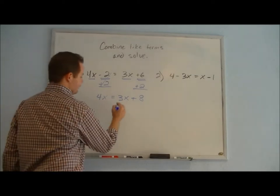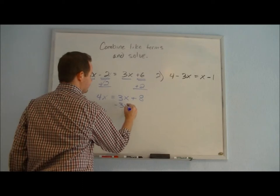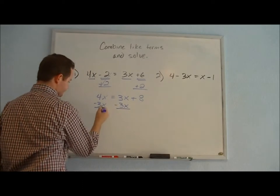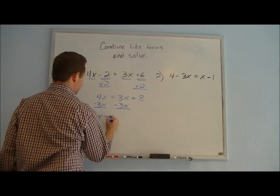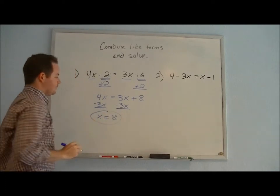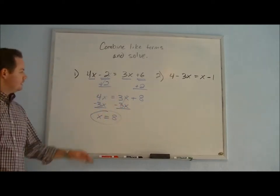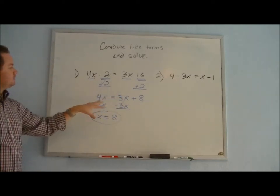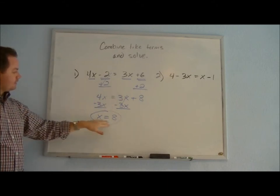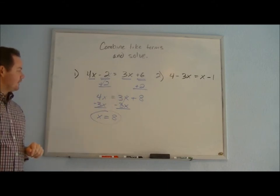Up next, we'll subtract 3x from both sides. 4x minus 3x is 1x, which we can just write as x, and we're left with x equals 8 after we have cancelled out our terms, separated the variable and the number, combined the like terms to solve, and got x equals 8.